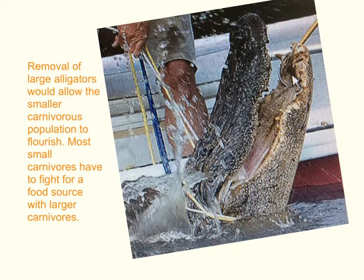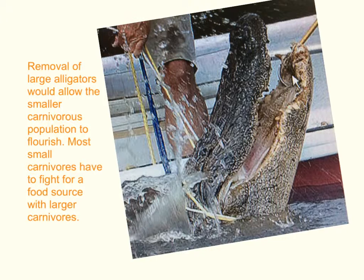Ecosystems are very sensitive to change. Removing a key component such as an alligator, which is one of the top predators, would alter the balance of the system. Most small carnivores cannot survive against the larger carnivores when fighting for a food source. Removal of large alligators would allow the smaller carnivorous population to flourish.